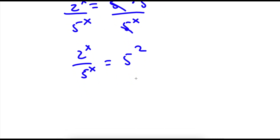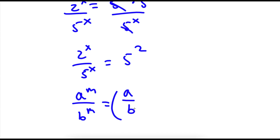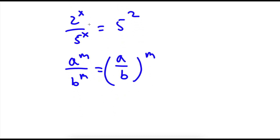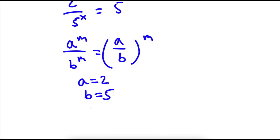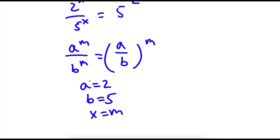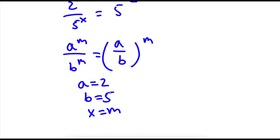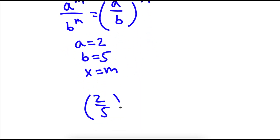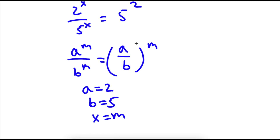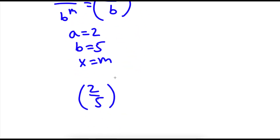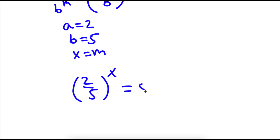Now, if I have something in the form a to the power of m over b to the power of m, this is equal to a over b to the power of m. So in this case, I have 2 to the power of x over 5 to the power of x — we can think of a as 2 and b as 5, and x as m. So now I have 2 over 5 to the power of x. And this is equal to 5 squared.